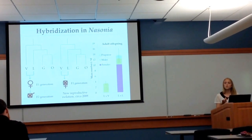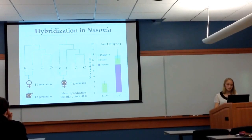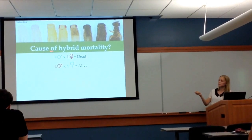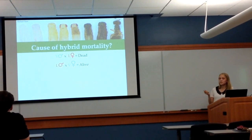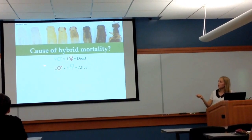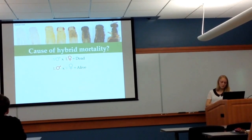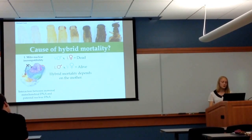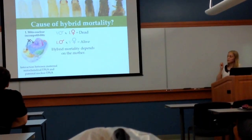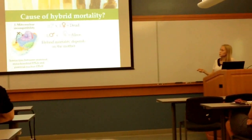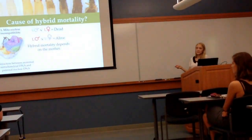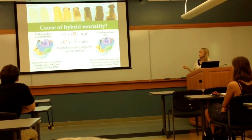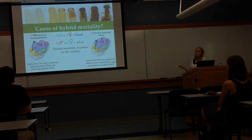This represents a new reproductive isolating mechanism. What could be the cause of this hypermortality, this new reproductive isolation? When we cross vitripennis males with longicornis females, all the resulting hybrid daughters die. But when we do the reciprocal cross — crossing a longicornis male with a vitripennis female — all the resulting hybrid daughters live. So we know hypermortality is dependent on the mother. There are two main explanations for this pattern: one, it could be due to a mitonuclear incompatibility, in which there's a deleterious interaction between maternally inherited mitochondrial DNA and paternally inherited nuclear DNA; or two, it could be due to a nuclear maternal effect, in which there's a deleterious interaction between some product in the egg from the mother and the paternal nuclear DNA.